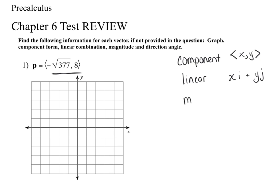Magnitude is the square root of X squared plus Y squared. If you have it in component form, take the square root of the sum of the squares. Think of the Pythagorean theorem — it's the same thing.